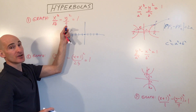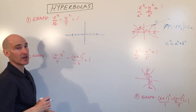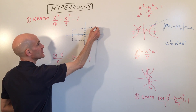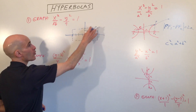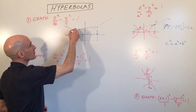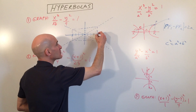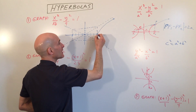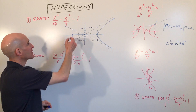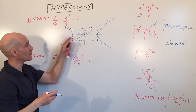In the y direction, I'm going to go up and down 3 — square root of 9 is 3 — and that's our b value. We're going to draw a dashed rectangle through these points, and we're going to use the corners of this rectangle to draw our asymptotes. The asymptotes go right through the center point and through the corners. Remember, the graph gets closer and closer to that asymptote as it goes out — it's approaching the asymptote — giving us an idea of how wide or narrow the hyperbola is.